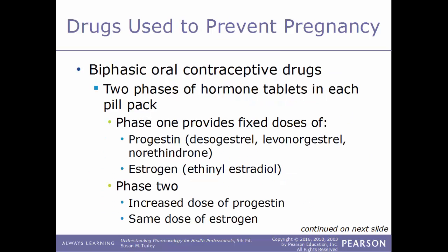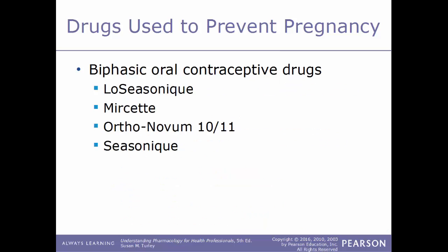Biphasic drugs contain two phases of hormone tablets in each pill pack. Phase 1 provides a fixed dose of a progestin such as desogestrel, norethindrone, or levonorgestrel, and a fixed dose of estrogen such as ethinyl estradiol. In phase 2, the estrogen dose stays the same but the progestin dose increases. Examples of biphasic contraceptive drugs include Lo Seasonique, Mircette, Ortho-Novum 10/11, and Seasonique.